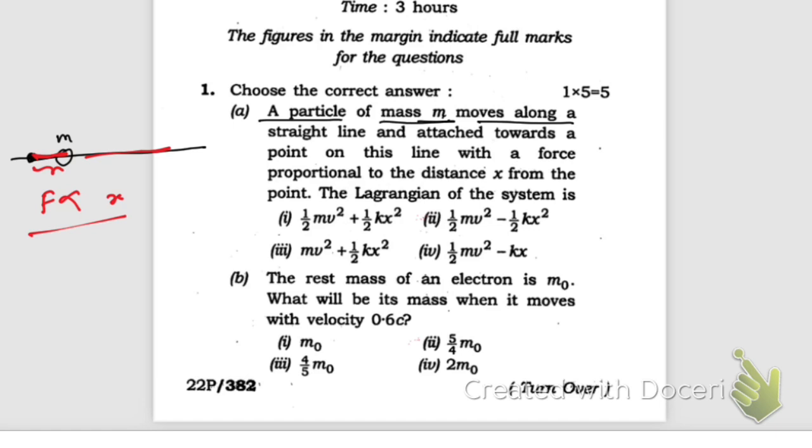We need to find the Lagrangian of this system. In this case, kinetic energy will be half m v squared, where v is dx/dt. The answer is given in terms of v, that's why I am writing v squared. The potential energy will be given by half k x squared, where k is the spring constant. So Lagrangian is T minus V, and you're gonna get this answer. This is the correct answer.